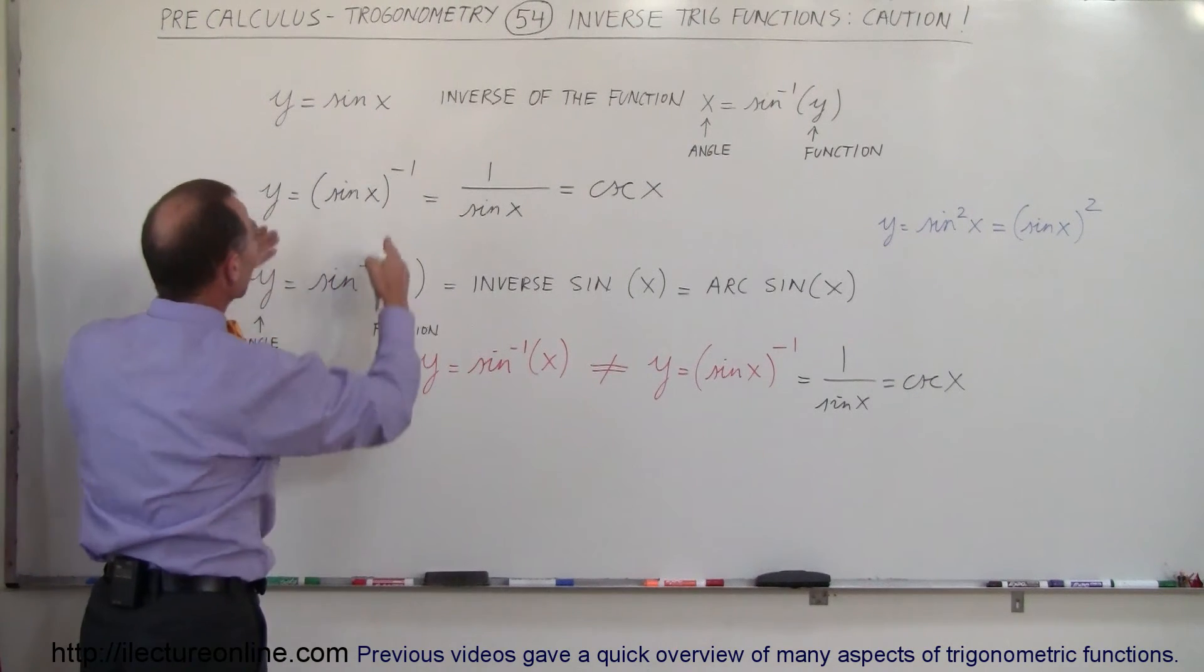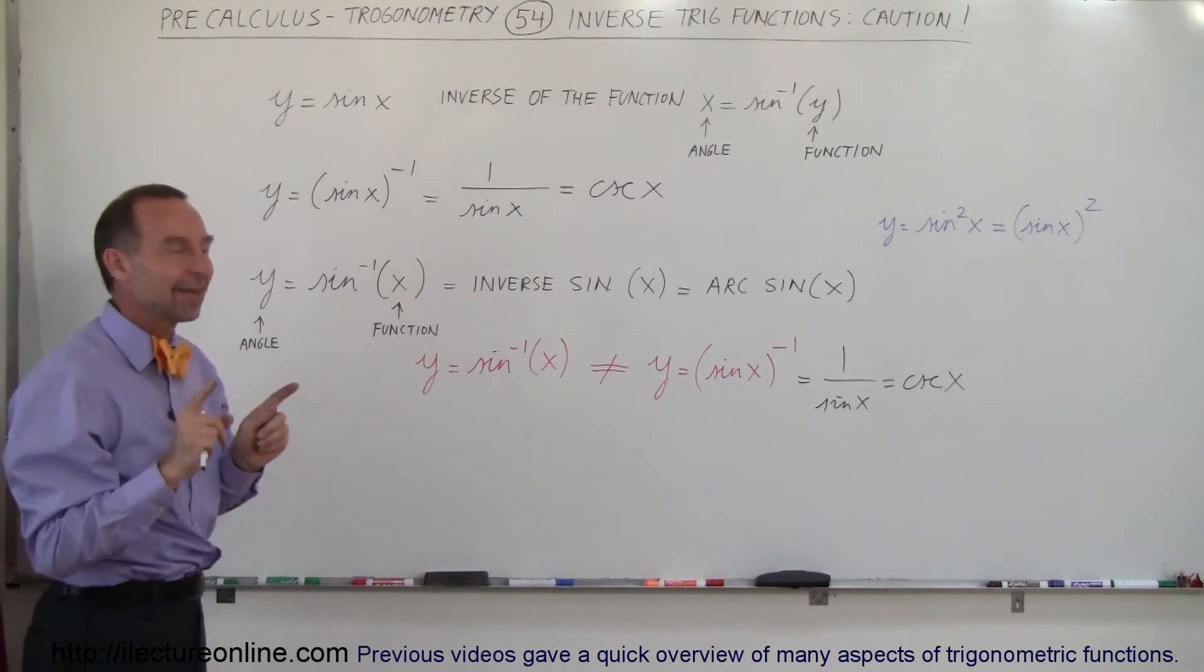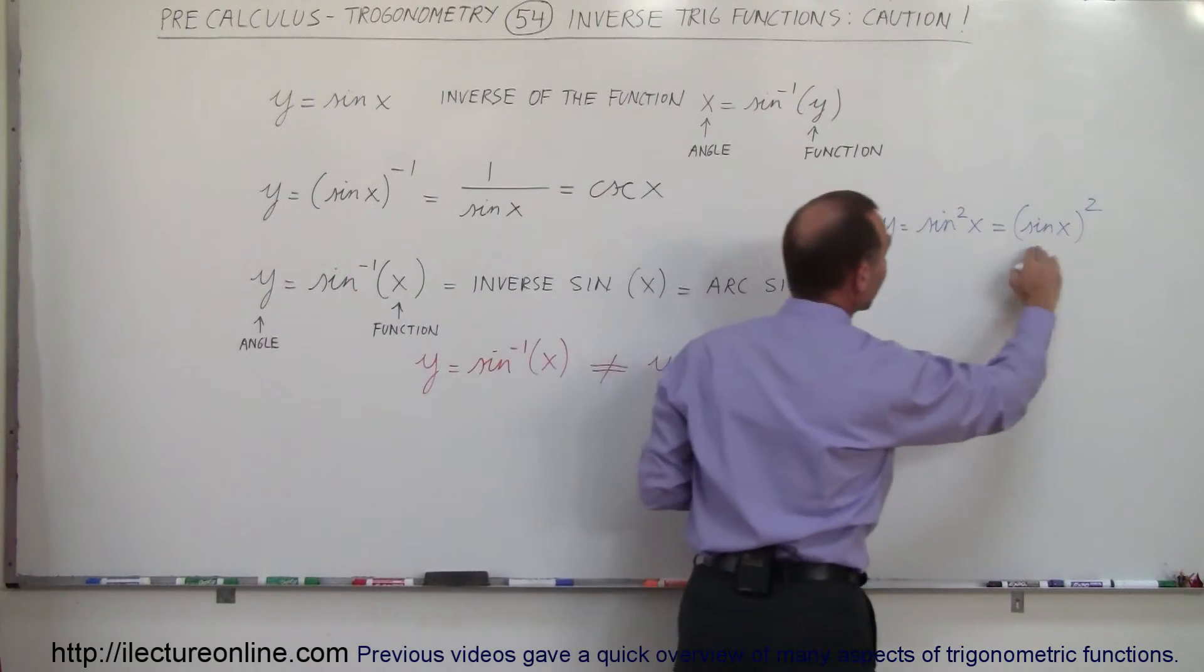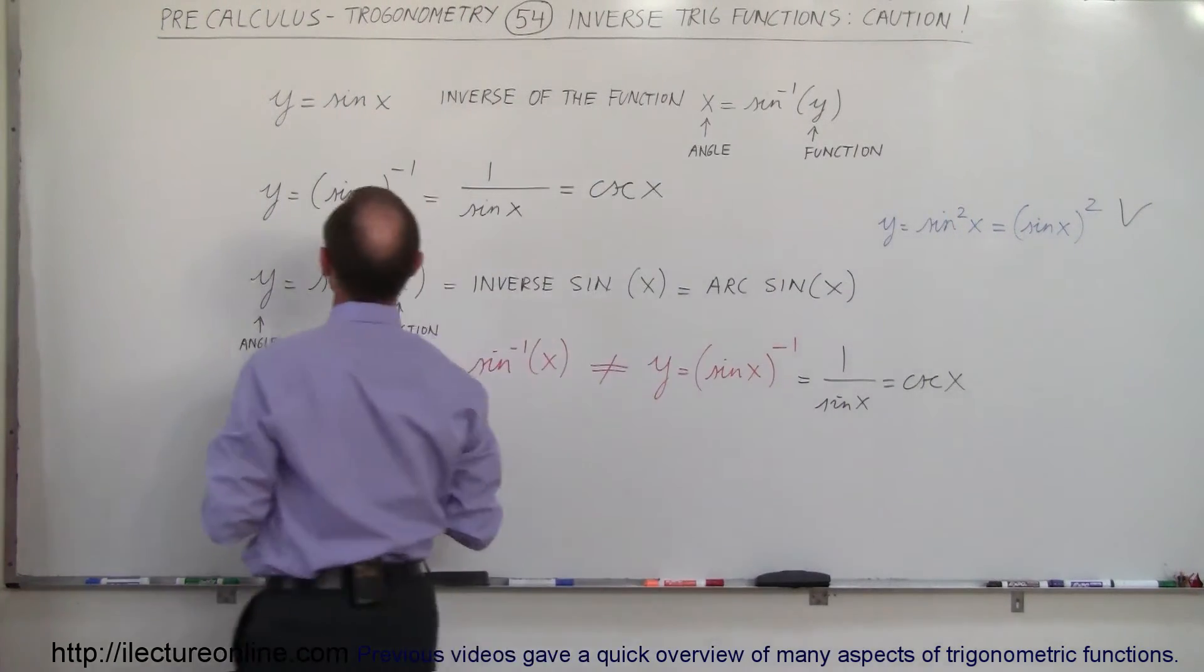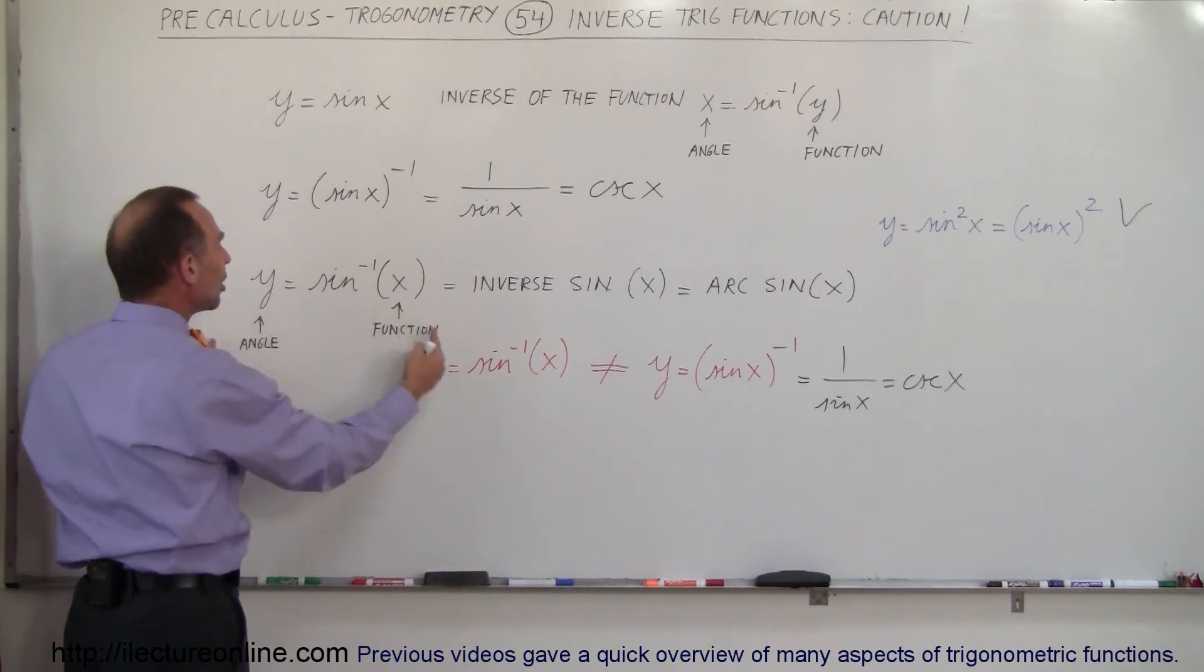Taking the inverse of the function like this simply says 1 over that function, which is the cosecant of x, and that's not the same thing. So keep that in mind. The reason why it's confusing often is because here this is appropriate. We can do this. This is correct. This simply says 1 over the sine of x. This means that we've interchanged the function and the angle.